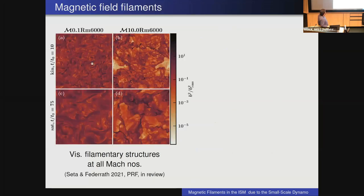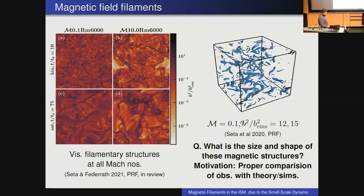Visually looking at the fields at two Mach numbers at different time snapshots, we always see filamentary structure. The magnetic fields generated by small-scale dynamo are filamentary even for very low Mach number of 0.1. Even at much higher magnetic energy — normalized to the box — we still see this filamentary structure. The question is: what is the size and shape of these magnetic structures? The motivation is to properly compare these structures with what is seen in observations or in other simulations.